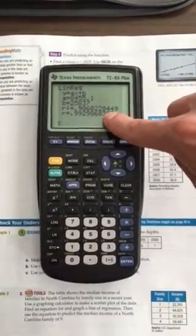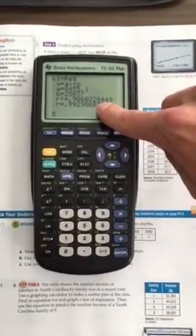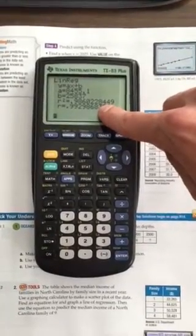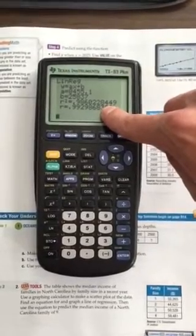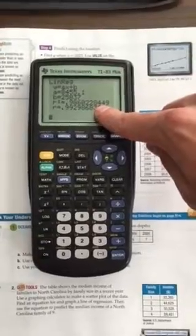The r value of 0.99, this is our correlation coefficient. This is very close to 1, which means the correlation is strong, and it's positive correlation because it's close to positive 1, not negative 1.